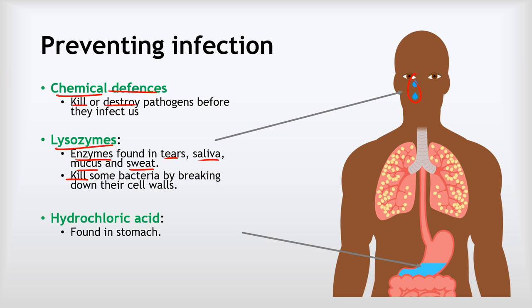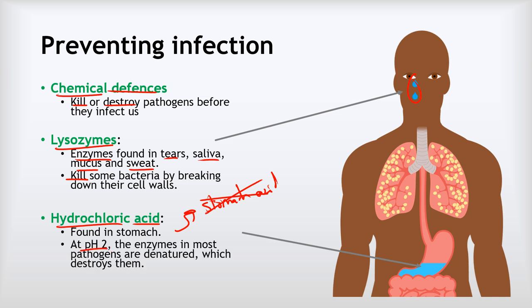The other big chemical defence is the hydrochloric acid found in our stomach. Do not say 'stomach acid' — that is not specific enough to get you marks in an exam. Say specifically hydrochloric acid. It has a pH of around 2, and at that pH the acid denatures the enzymes in the pathogens, killing them. Some pathogens are adapted to survive pH 2, so it doesn't kill everything, but it does kill a lot of pathogens that otherwise might cause us harm.